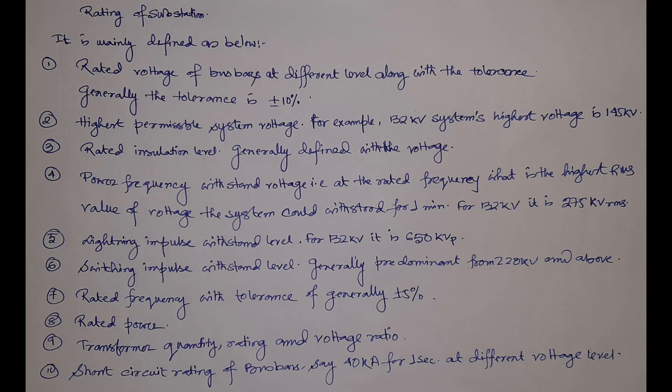Then there comes the rated insulation level, generally represented by the rated voltage, maximum system voltage, lightning impulse voltage, etc. Then comes the power frequency withstand voltage — this is the voltage at rated frequency at the highest RMS level that the system can withstand. For example, at the 132 kV level the power frequency withstand voltage is 275 kV RMS for one minute. That means at rated frequency, the maximum RMS voltage the system can withstand for one minute.